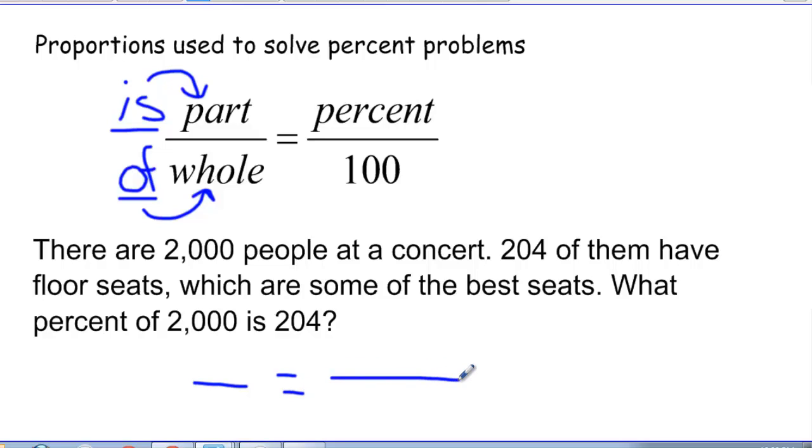We've identified the 204 as the part. And it also says what percent, so I know that the percent is the thing I'm going to be finding. So that's going to be my variable, and I'm going to put that over 100. So I want to know what part out of 100 is the same as 204 out of 2,000.